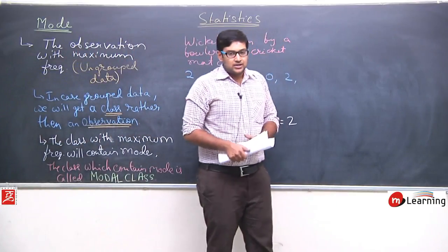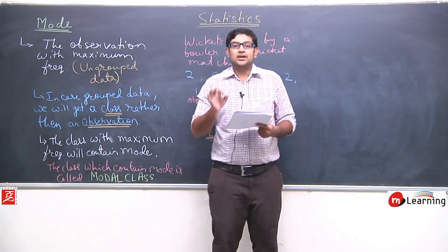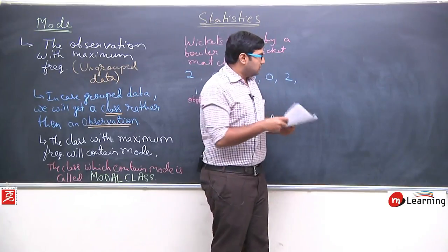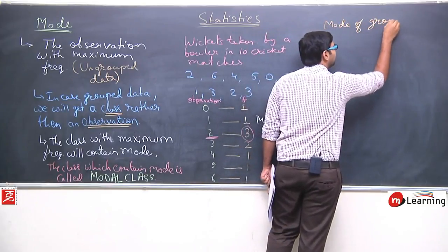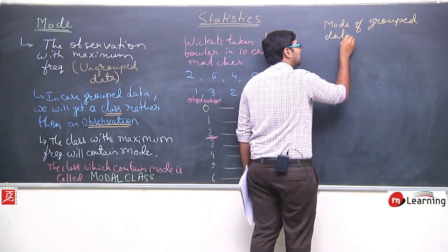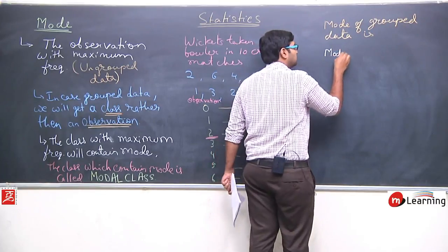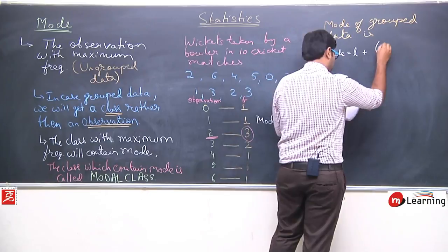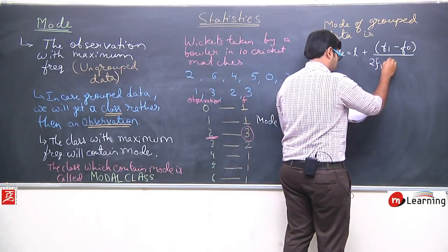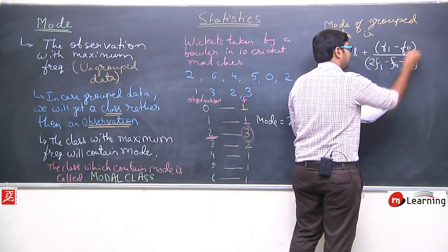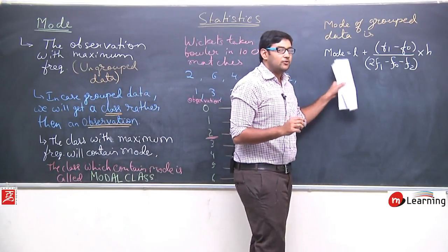So phir mode calculate kaise hoga? For mode calculation there is a formula — just remember this formula and apply it in the exam directly. The formula for mode of grouped data is: Mode = L + [(f1 − f0) / (2f1 − f0 − f2)] × h. This is the formula for calculating the mode of a grouped data.